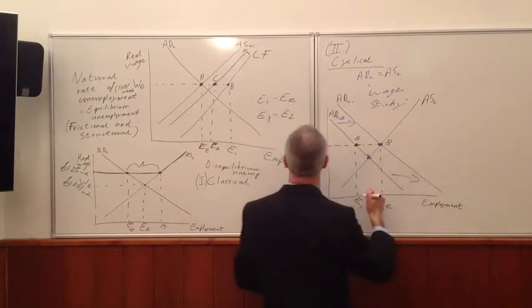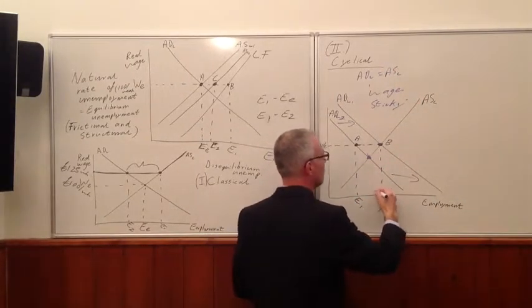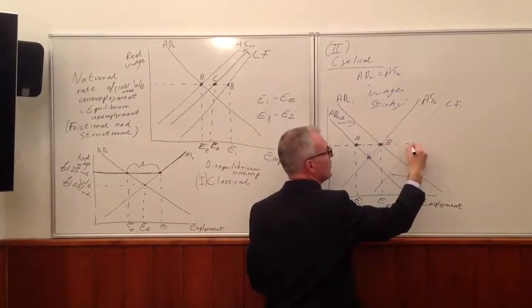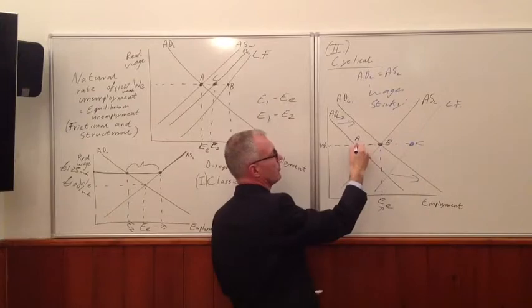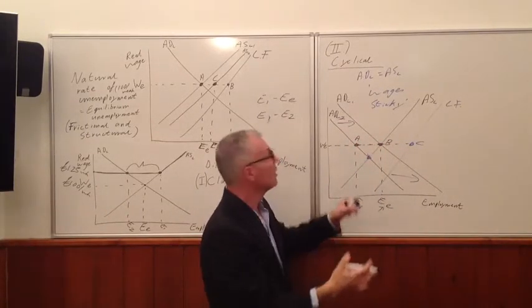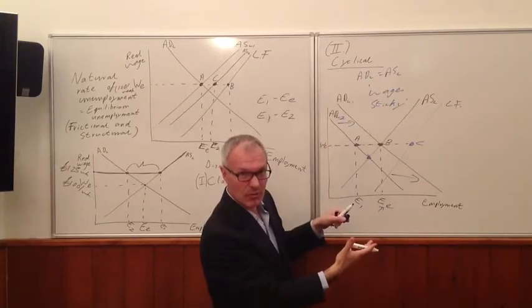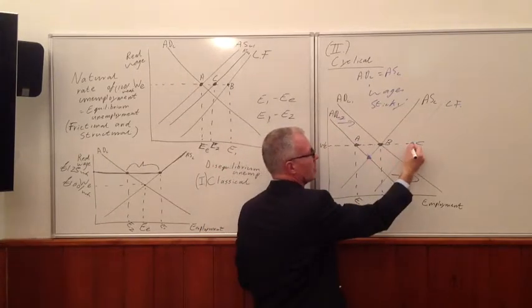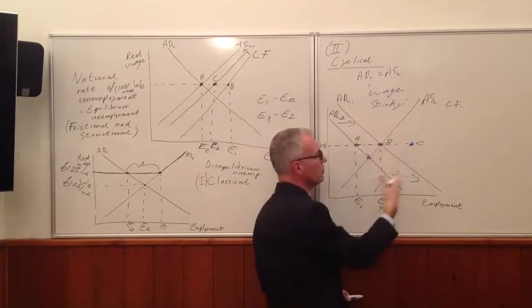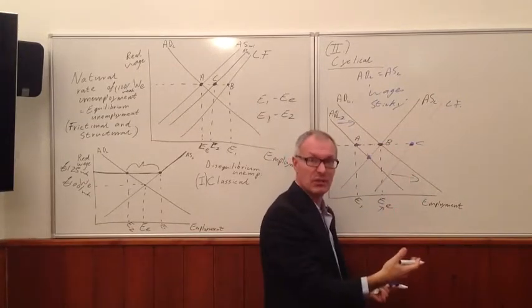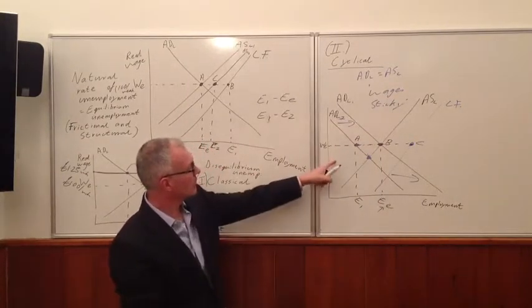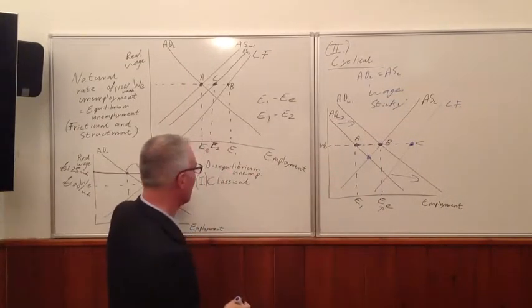Now remember, again, if we draw on the labour force here, we still have, whilst we've got this disequilibrium unemployment A to B, because it's cyclical unemployment, we also at the same time have equilibrium unemployment, a natural rate of unemployment, which is always with us, which is B to C.